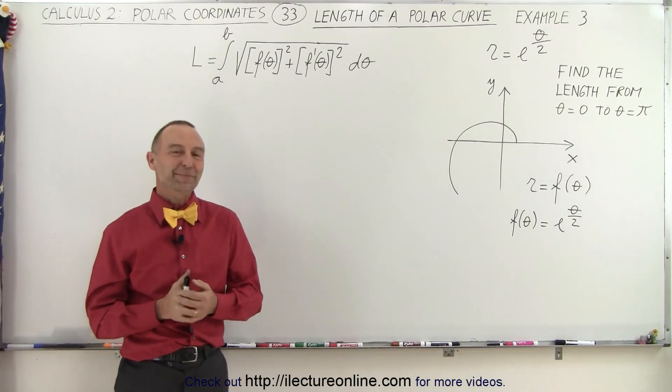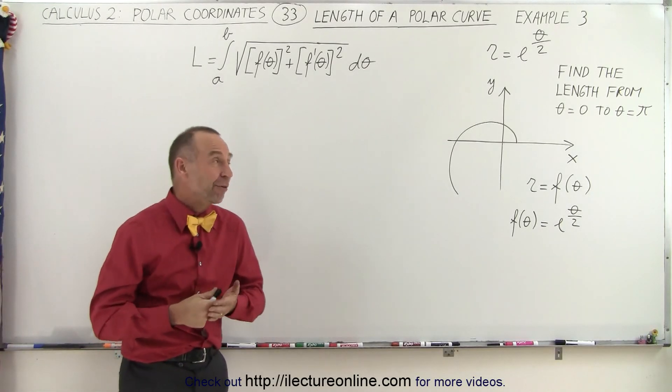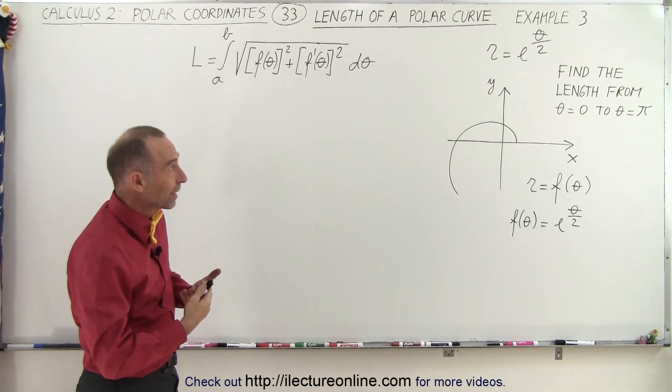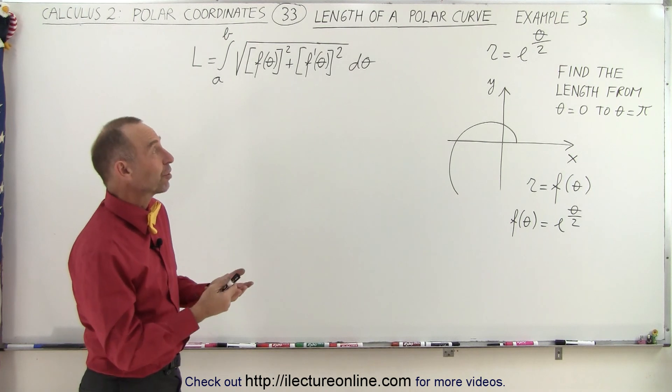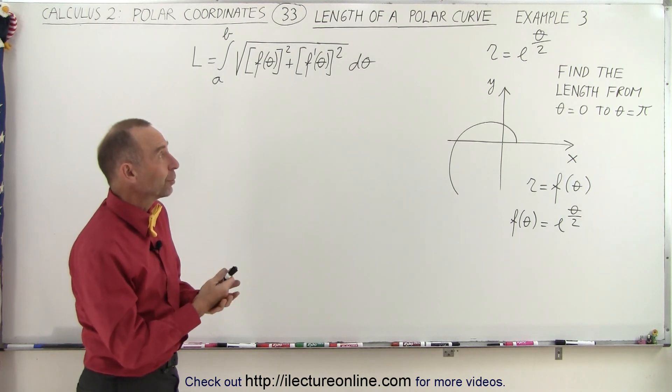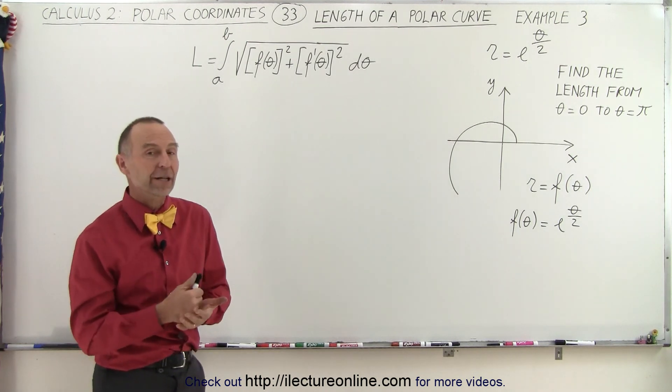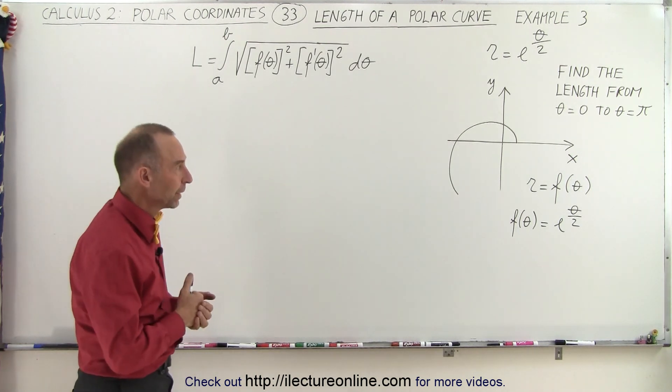Welcome to ElectronLine. Here we have a polar function, which is actually an exponential function. r is equal to e to the theta divided by 2.